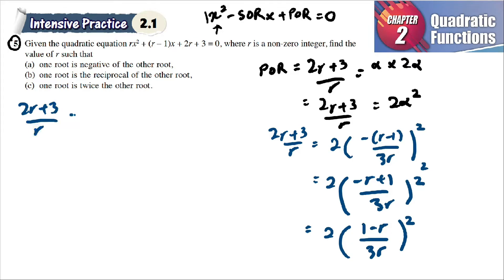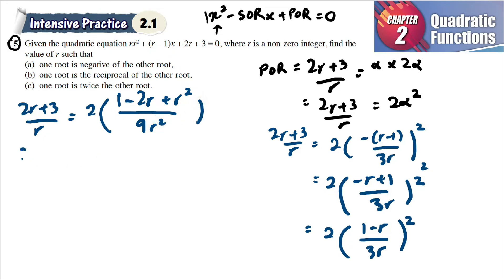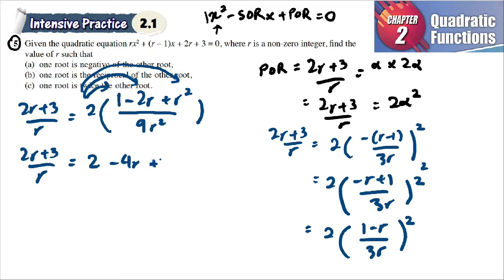Expanding (1−r)² gives 1 − 2r + r². So the right-hand side becomes 2(1 − 2r + r²)/(9r²), which equals (2 − 4r + 2r²)/(9r²). We now have (2r+3)/r equal to (2 − 4r + 2r²)/(9r²).